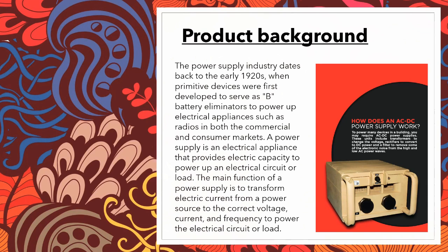How does an AC/DC power supply work? To power many devices in a building, you may require AC/DC power supplies. These units include transformers to change the voltage, rectifiers to convert to DC power, and a filter to remove some of the electronic noise from the high and low AC power waves.